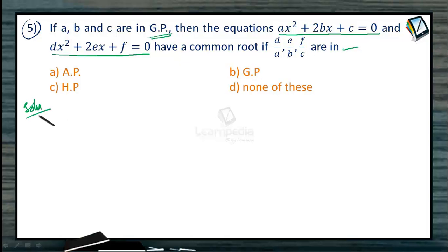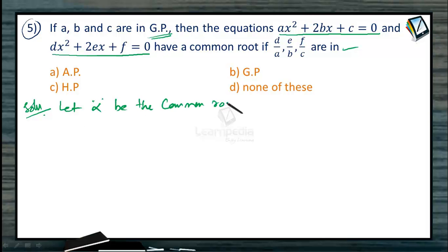See the solution of this problem. It is given that A, B, C are in geometric progression and the two equations have a common root. Let alpha be the common root. If we take alpha as the common root, then obviously alpha will be the root for the first equation as well as the second equation.